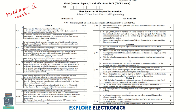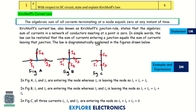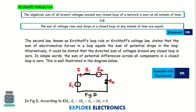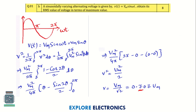Let us get into model question paper 2. The first question in part A is on Kirchhoff's laws — Kirchhoff's current law and voltage law need to be stated and explained with examples. If you write by taking examples with expressions applying KCL and KVL, that gives you complete marks.